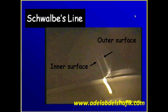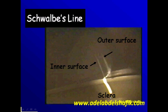The Schwalbe's line is located between the cornea and the sclera, and this is what you need to identify on a slit lamp. The inner surface of the cornea, the outer surface of the cornea, and in between we have the stroma, with the sclera behind. You see this convex line — going from convex inward, this location is where the Schwalbe's line is present.